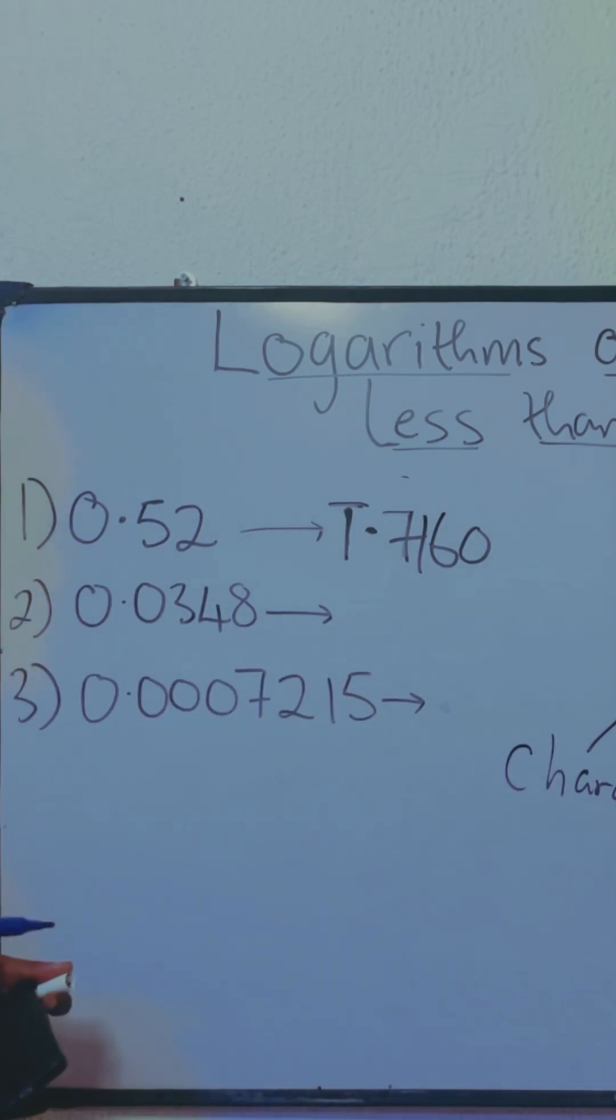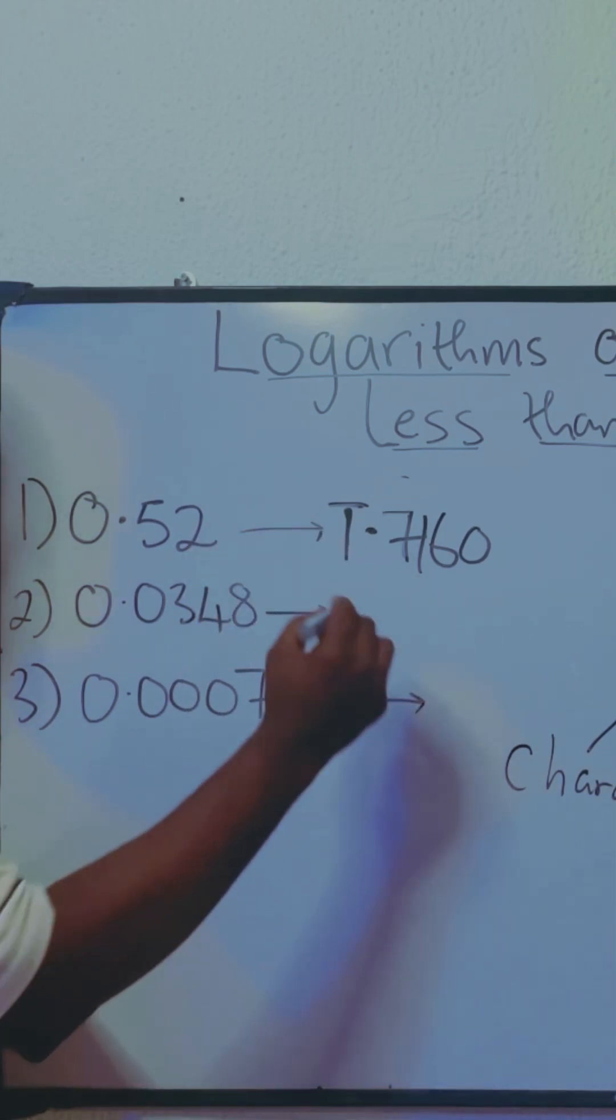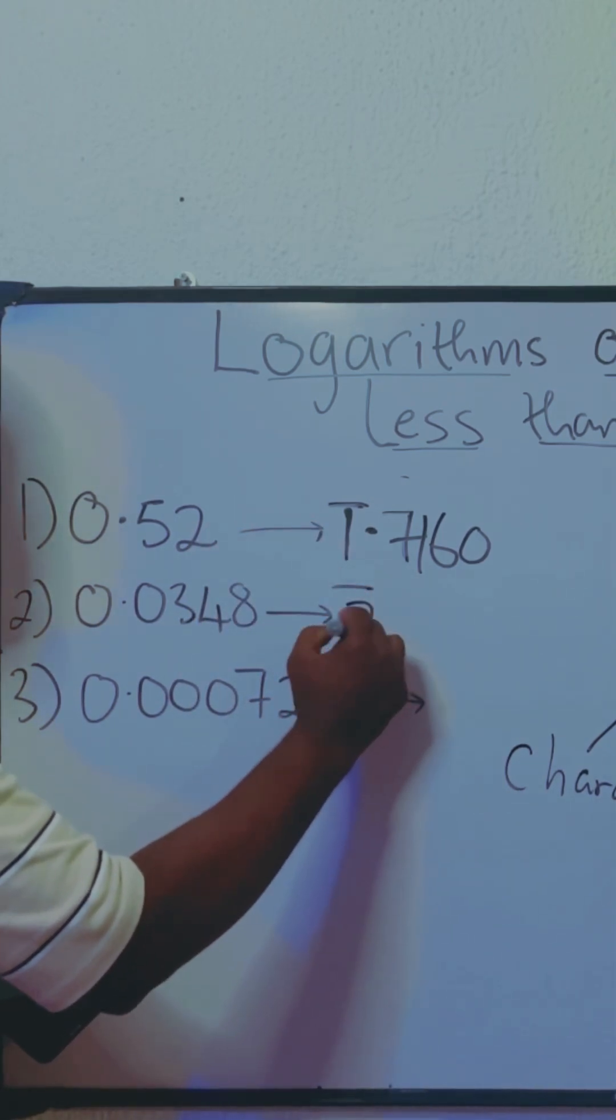Now the same goes for the second example. How many zeros can you count here? One, two. So in your characteristic, you're going to have bar two points.